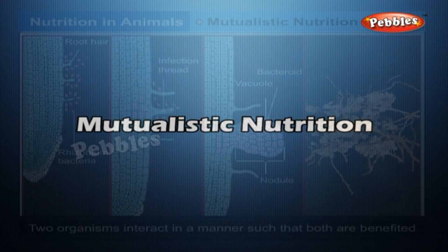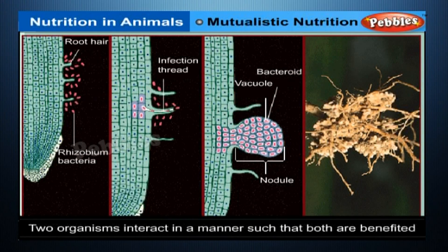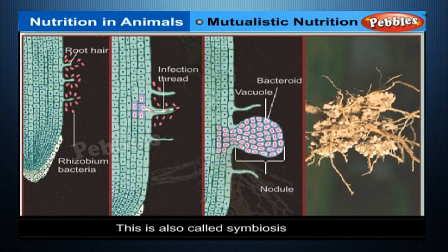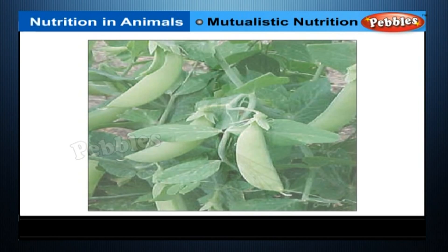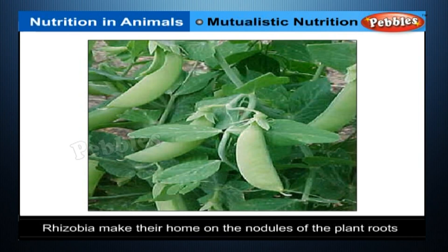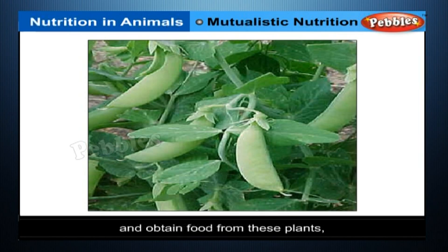Mutualistic Nutrition. In mutualistic nutrition, two organisms interact in a manner such that both are benefited. This is also called symbiosis. A very good example is the association between bacteria called rhizobia and plants belonging to the pea family. Rhizobia make their home in the nodules of the plant roots and obtain food from these plants, while the plants obtain nitrogen through them.